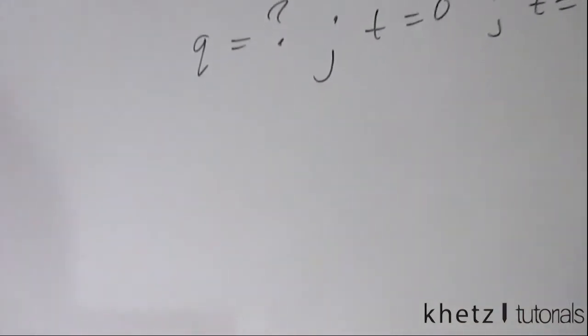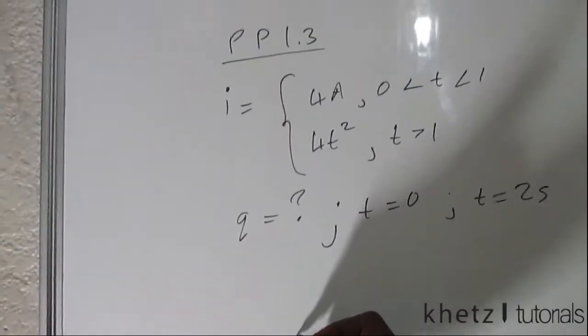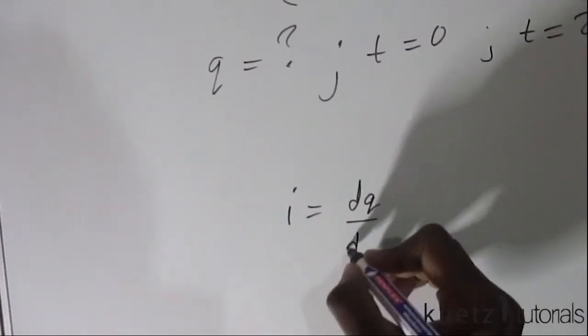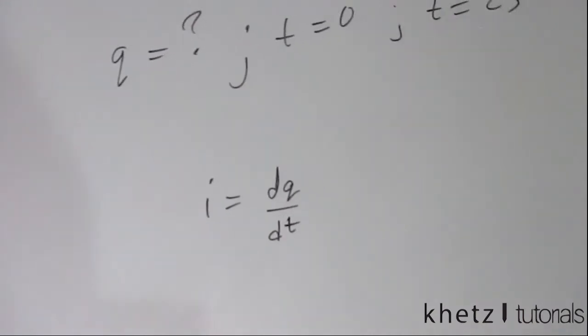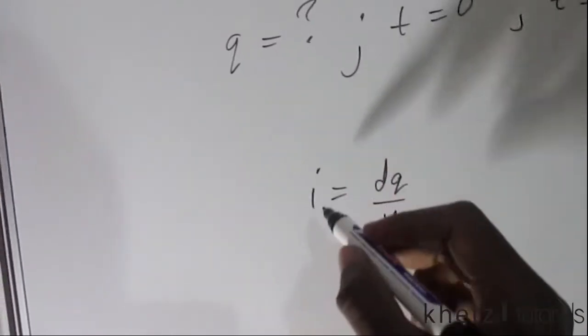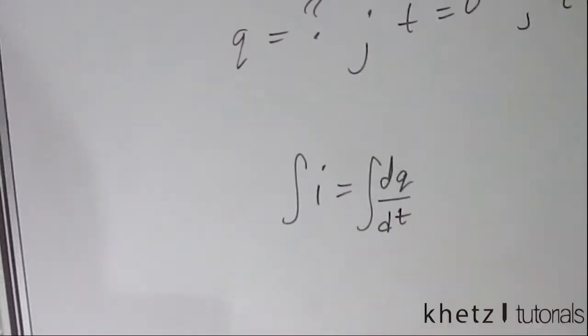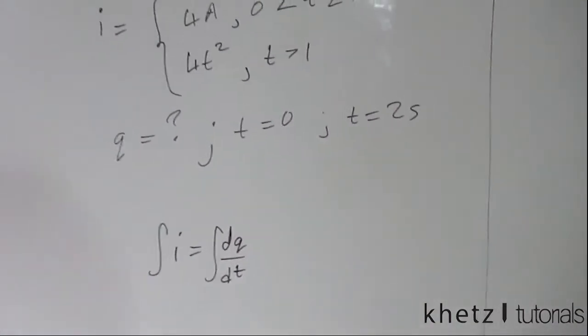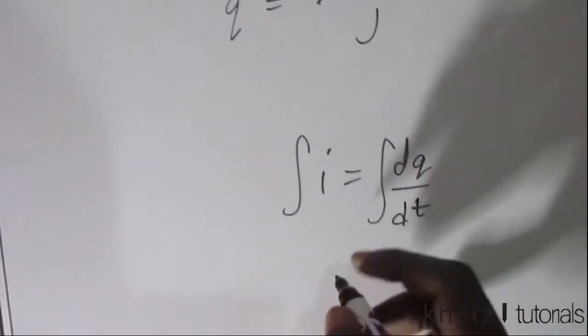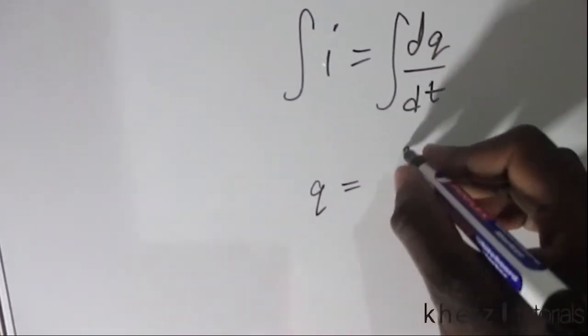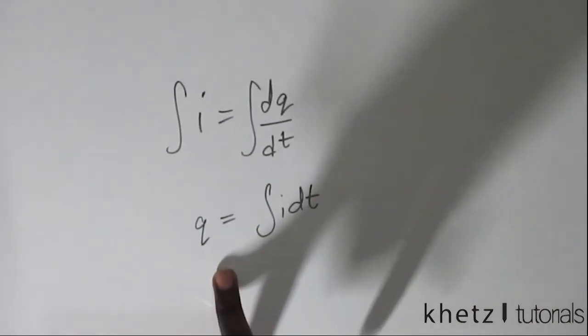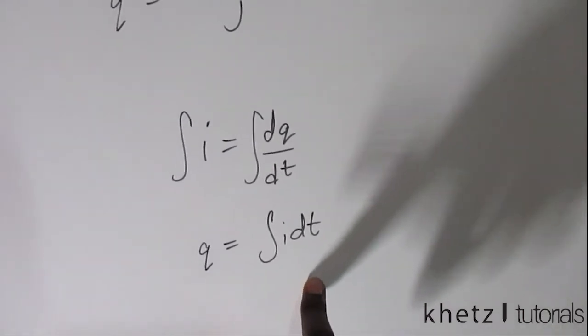So using the formula which we know, which says current is equal to the time change in charge, or the derivative of the charge, you can manipulate this formula by integrating both sides. I do advise that anyone who isn't familiar with the concept of integration look it up. So integrating both sides will give this formula here. And so to find the charge given current, you have to integrate the current.